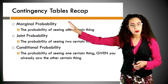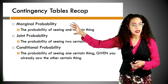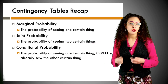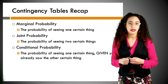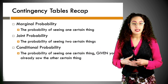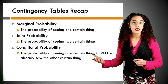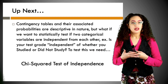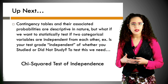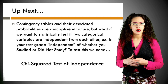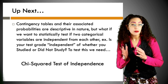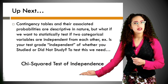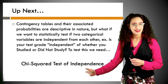Let's recap. Marginal probabilities: the probability of seeing one certain thing — nothing special there. Joint probability: the probability of two things happening — you'll see the word 'and,' like 'got a D and didn't study.' Conditional probability: the probability of seeing one thing given that you already saw the other — like 'given someone didn't study, what's the probability they got a D?' Contingency tables are descriptive, but to statistically test if two categorical variables are independent, we need the chi-squared test of independence — and that's where we're going next.